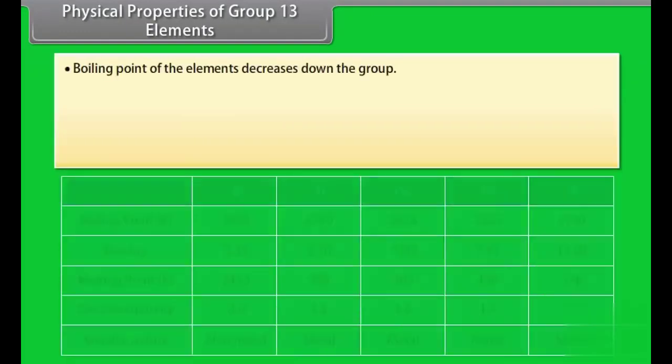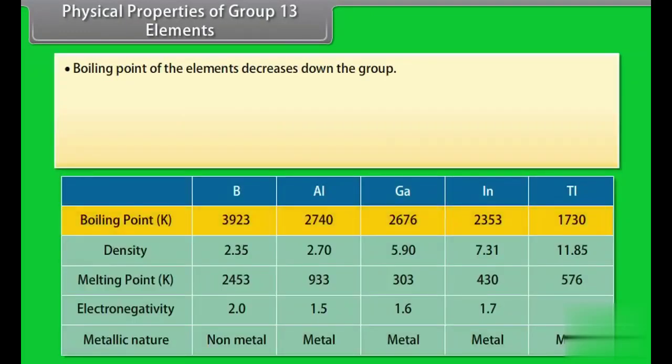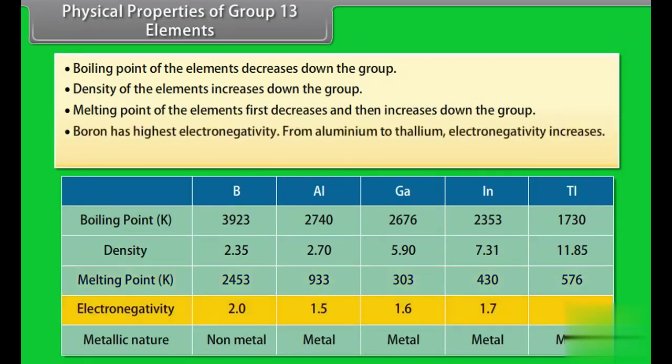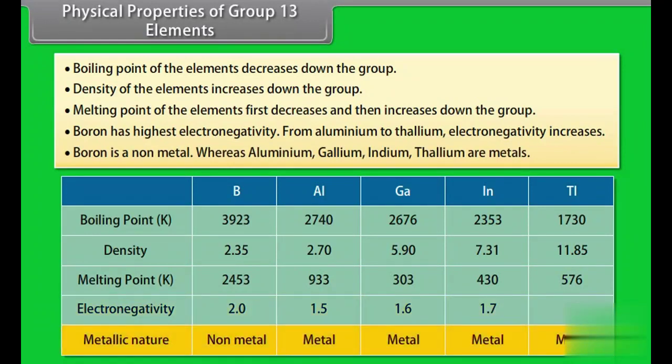Physical properties of group 13 elements. Boiling point of the elements decreases down the group. Density of the elements increases down the group. Melting point of the elements first decreases and then increases down the group. Boron has highest electronegativity. From aluminium to thallium electronegativity increases. Boron is a non-metal, whereas aluminium, gallium, indium, thallium are metals.